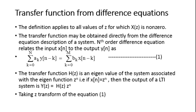The transfer function may be obtained directly from the difference equation description of a system. An nth order difference equation relates the input x of n to the output y of n as: summation k equals 0 to N of a_k times y of n minus k, equals summation k equals 0 to M of b_k times x of n minus k. Call this equation number 1.